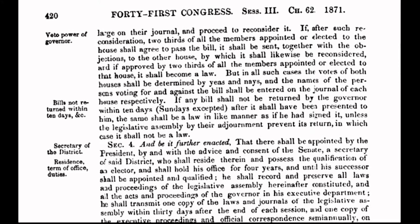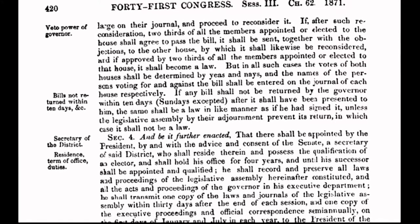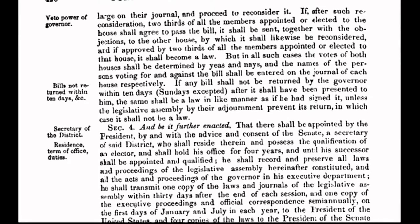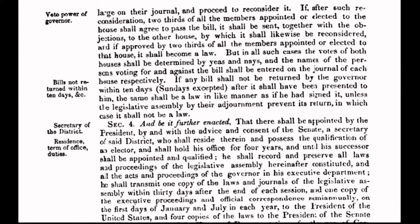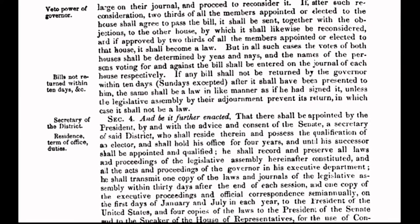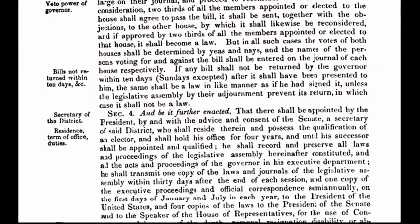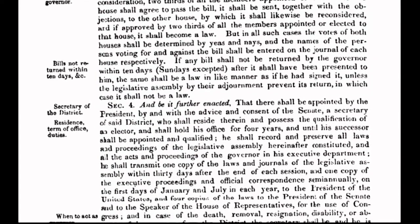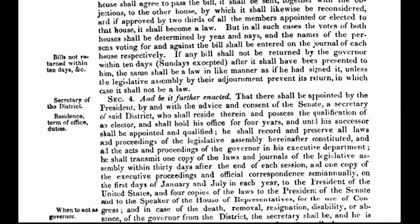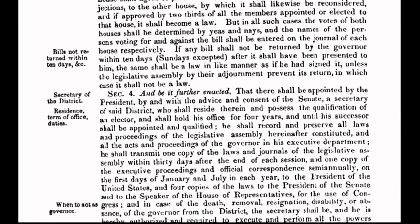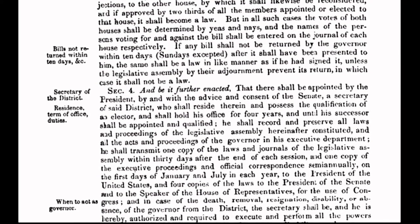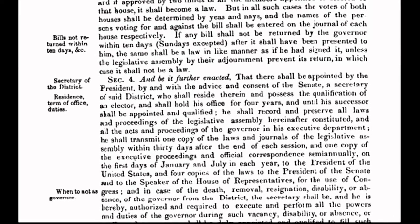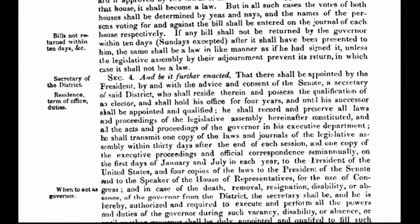In preparation for stealing America, the puppets of Britain's banking cabal had already created a second government — a shadow government designed to manage what the common herd believed was a democracy, but what really was an incorporated United States. Conspiring together, this two-headed monster disallowed the common herd all of their sovereign rights under the original constitution.